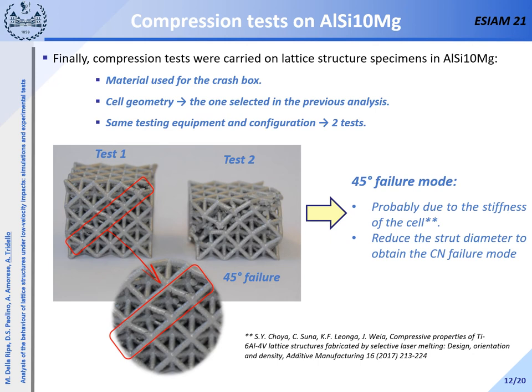Indeed, by analyzing the recorded video, the specimens failed at 45 degrees, as shown in this slide. According to the literature, this may be due to the different stiffness of the cell and the interaction between the cell and the material. According to this experimental evidence, a failure mode called failure plastic strain — indicating the plastic strain energy at which a 1D element fails — has been added to the model.